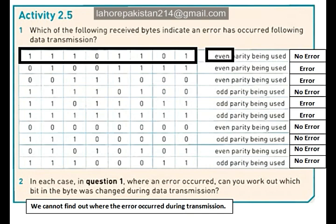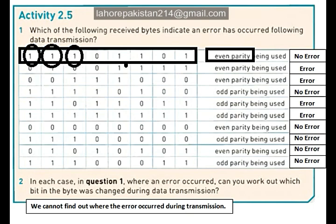You are required to have even parity in the first byte. Now let's count the number of ones in this byte: 1, 2, 3, 4, 5, 6. As you know, 6 is an even number, so there is no error in this transmission because we wanted even parity.